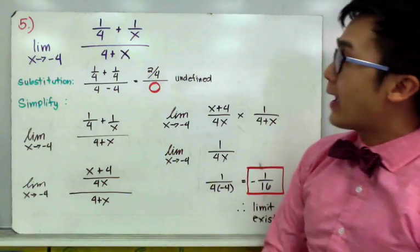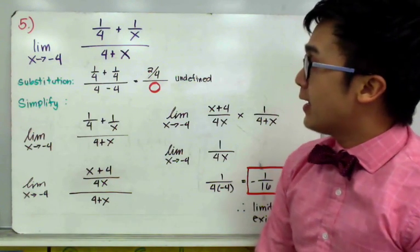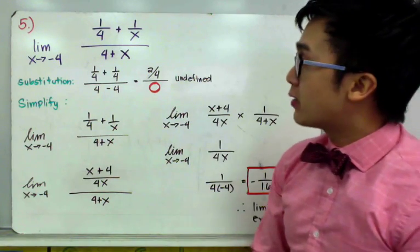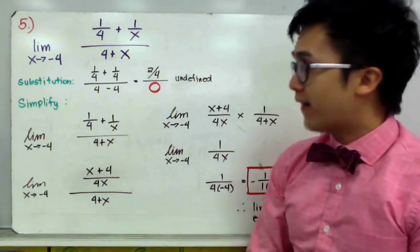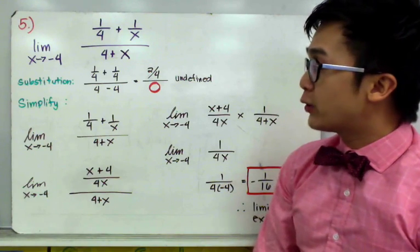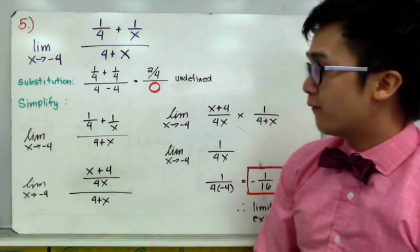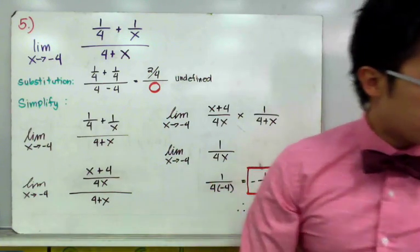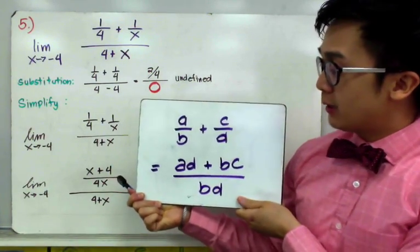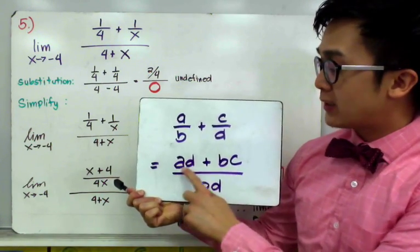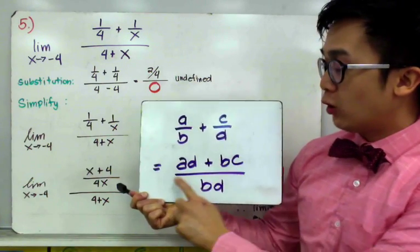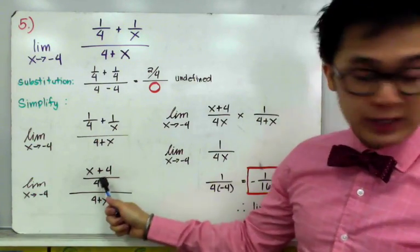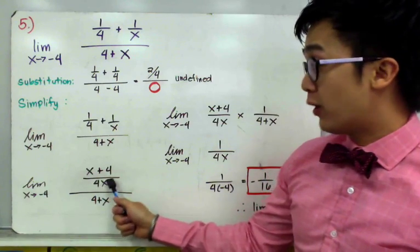For example 5, we have the limit of 1/4 plus 1 over x, all over 4 plus x, as x approaches negative 4. Substituting negative 4 makes the denominator 0 — undefined. This is a complex fraction, so we first simplify the numerator: using the rule a/b plus c/d equals ad plus bc all over bd, we combine 1/4 plus 1/x into x plus 4, all over 4x. This gives us x plus 4 over 4x, divided by 4 plus x.